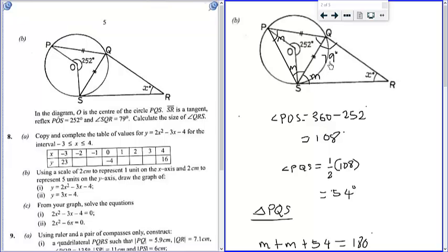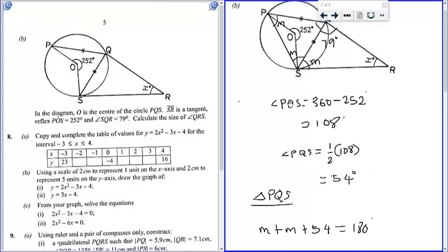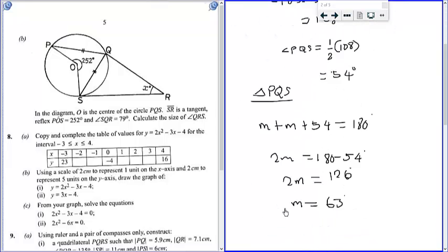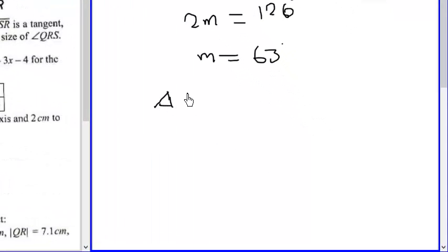And because M is equal to 63 degrees, we need to use the fact that M plus 79 plus X should give us 180. So from triangle SQR, we know that M plus 79 plus X should be equal to 180 degrees.